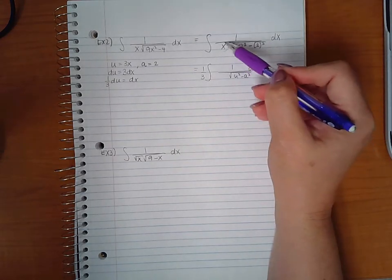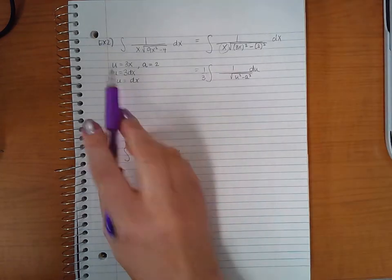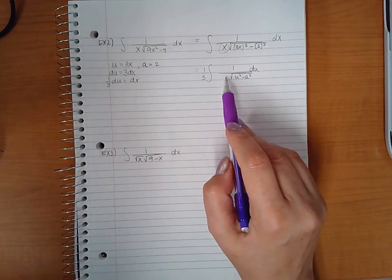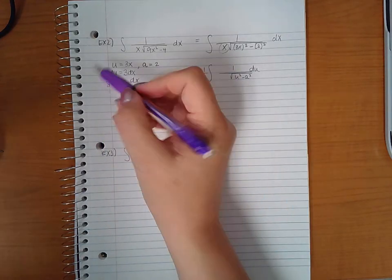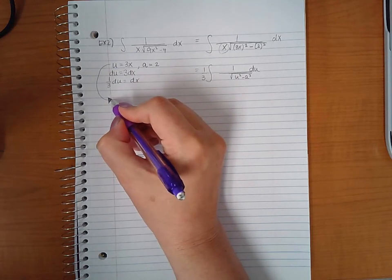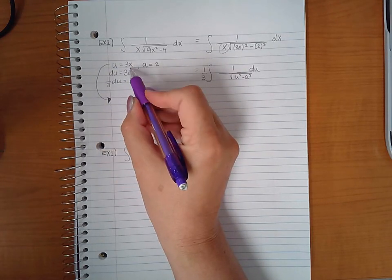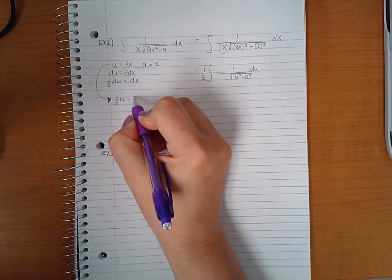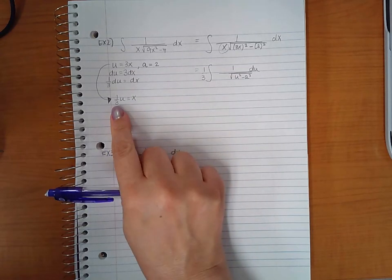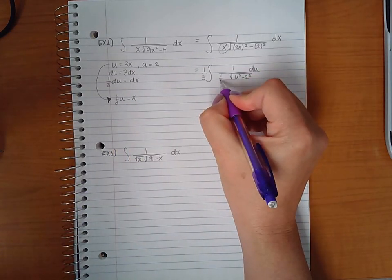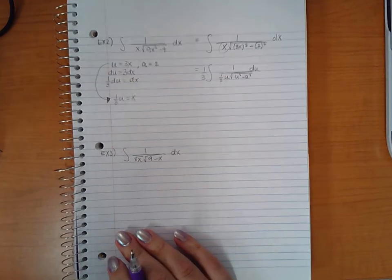The problem I have here is this. Notice that u equals 3x. So what is it that I plug in for x by itself? Well you can take this expression, and since I don't have a 3 here, I can multiply by 1 third there. So I get 1 third u equals x. And now I have an expression to plug in for x. So I get 1 third u here as well.